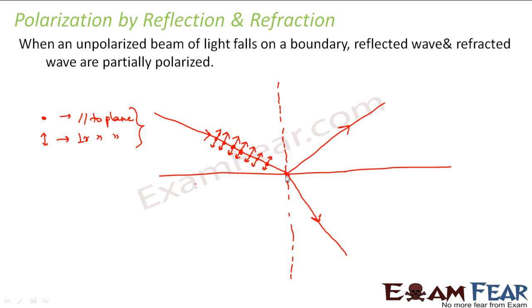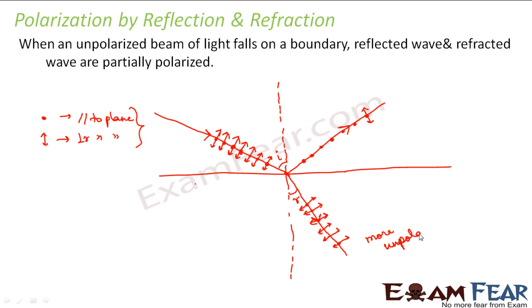When this ray is incident on the boundary, some of the ray is reflected and the remaining is refracted. This is the angle of incidence and this is the angle of refraction. It was found that most of the light in the reflected ray is polarized parallel to the plane, with very few unpolarized components. Whereas most of the light along the refracted ray is unpolarized with one or two polarized components. So both the reflected ray and the refracted ray are partially polarized. The refracted light wave is more unpolarized and the reflected light wave is more polarized.